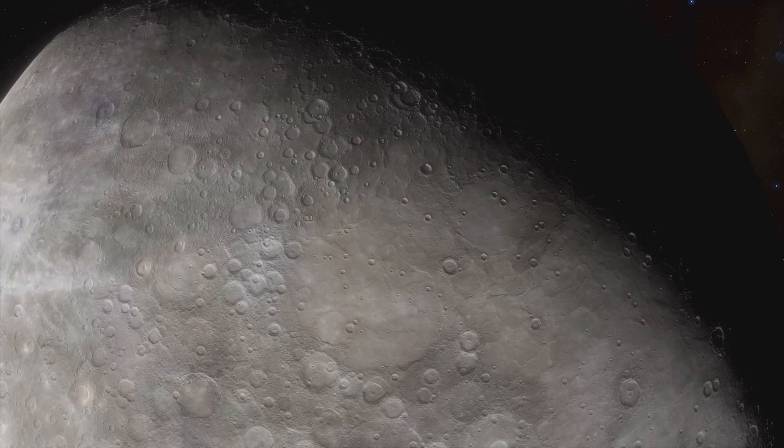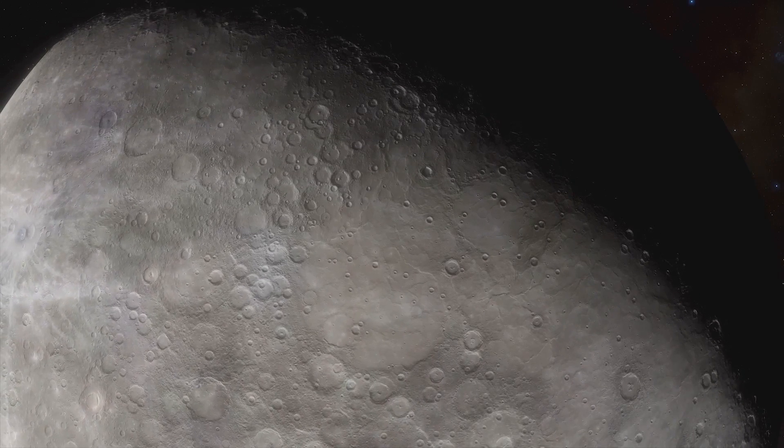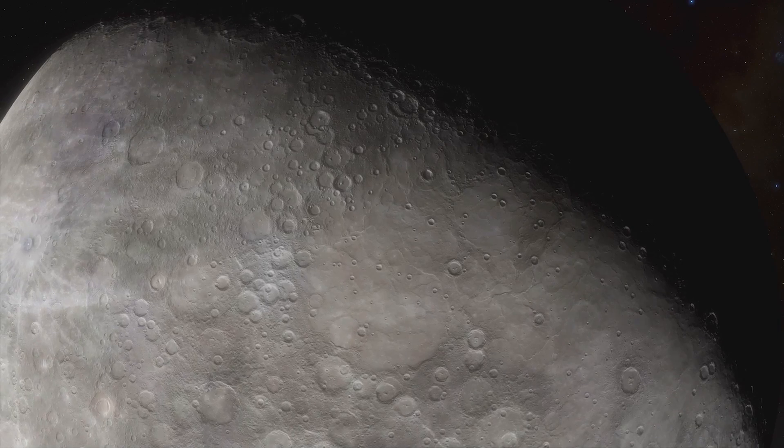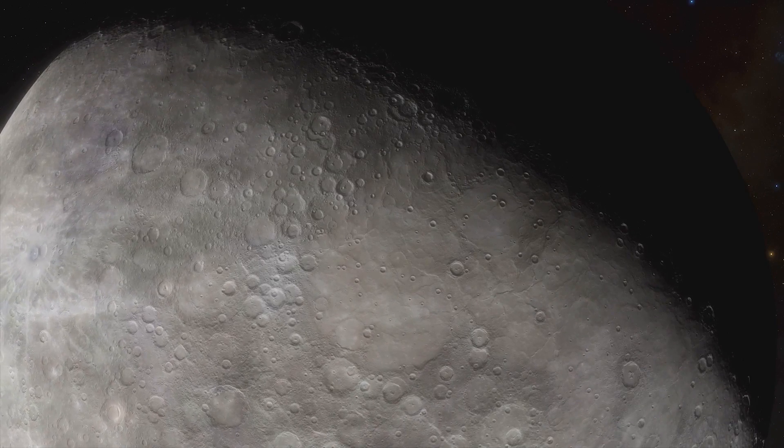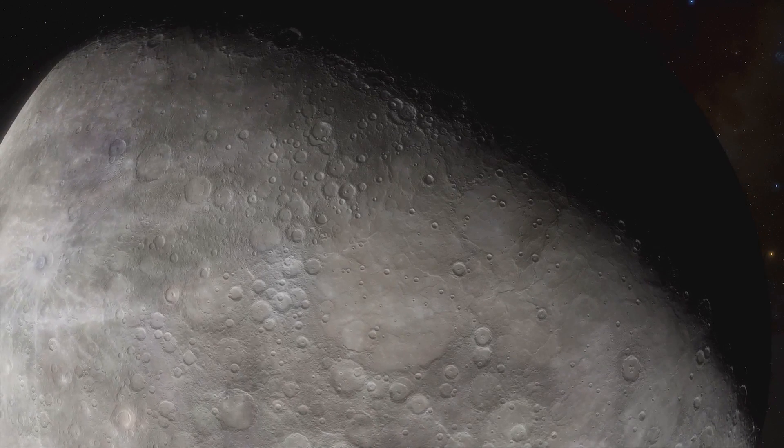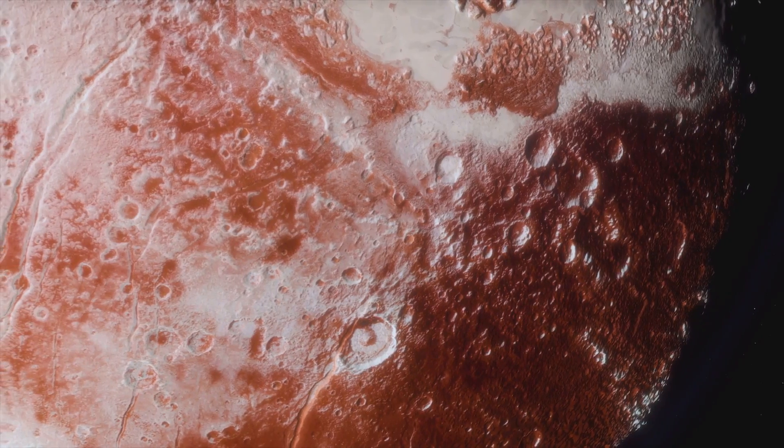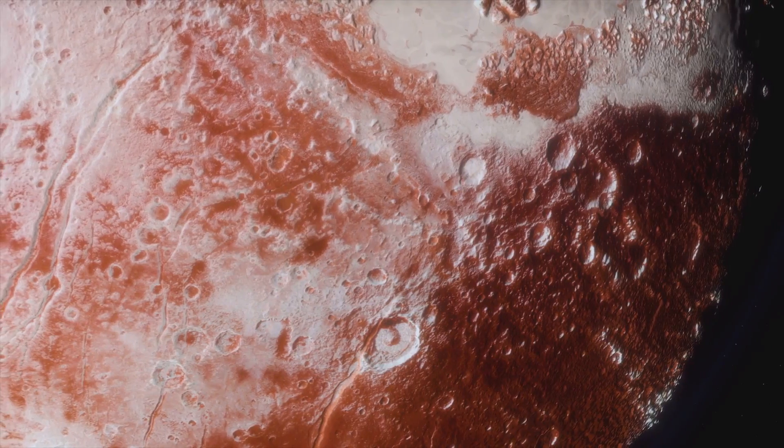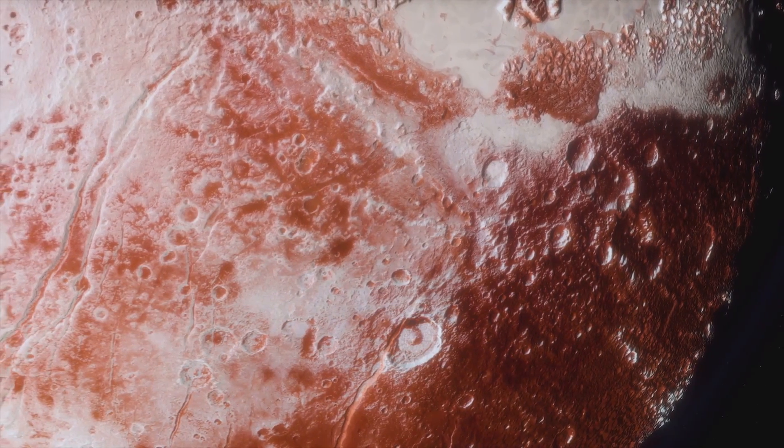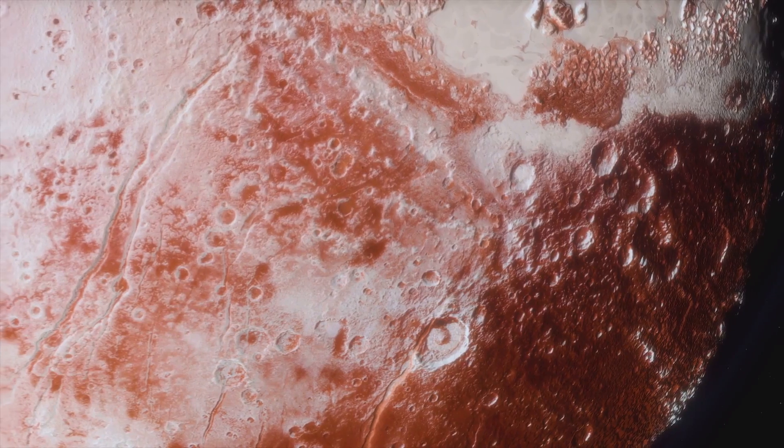These craters come in all shapes and sizes. Some are tiny, no bigger than a small town, while others are so large they could swallow whole countries. The largest of these is the Caloris Basin, a colossal crater about 800 miles in diameter. Formed by an impact so powerful it sent shockwaves rippling across the planet, it's one of the largest impact basins in the solar system.